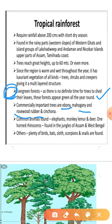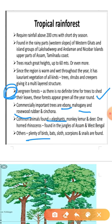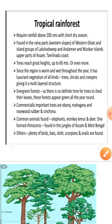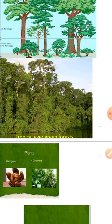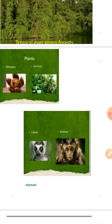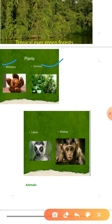Common animals found in this area include elephant, monkey, lemur, deer, and one-horned rhinoceros — especially the one-horned rhinoceros found in the jungles of Assam and West Bengal. Other animals like plenty of birds, bats, sloths, scorpions, and snails are also found in these forests. Here you can see the multi-layer structure picture of the tropical evergreen forest, with plants like mahogany and cinchona, and animals like lemur and monkey.